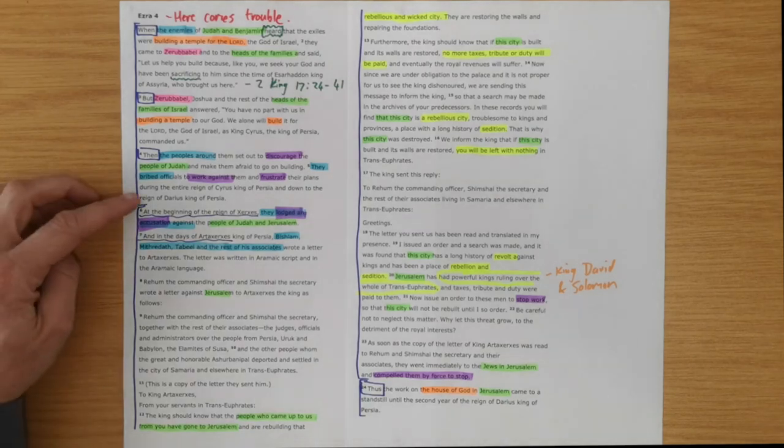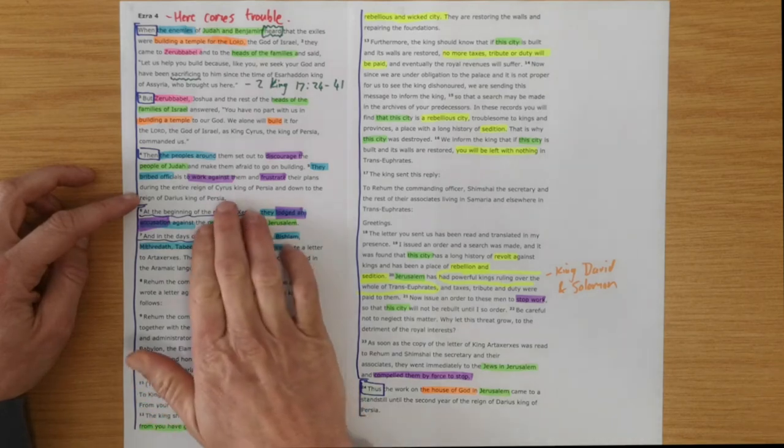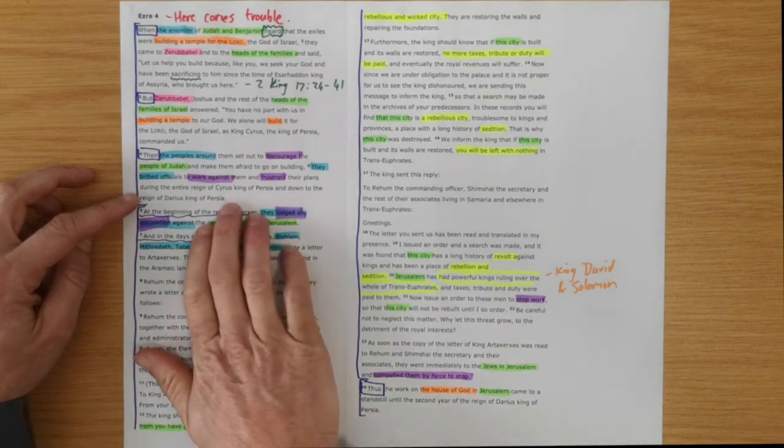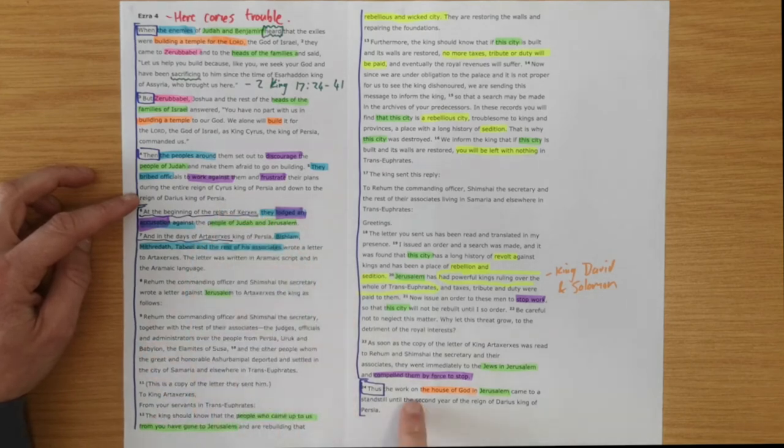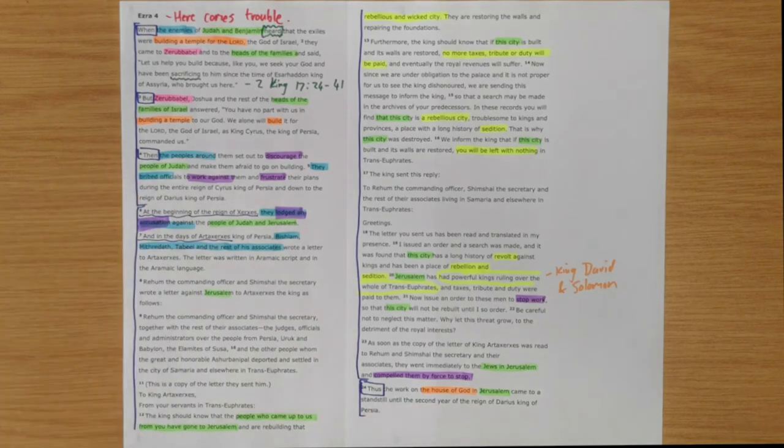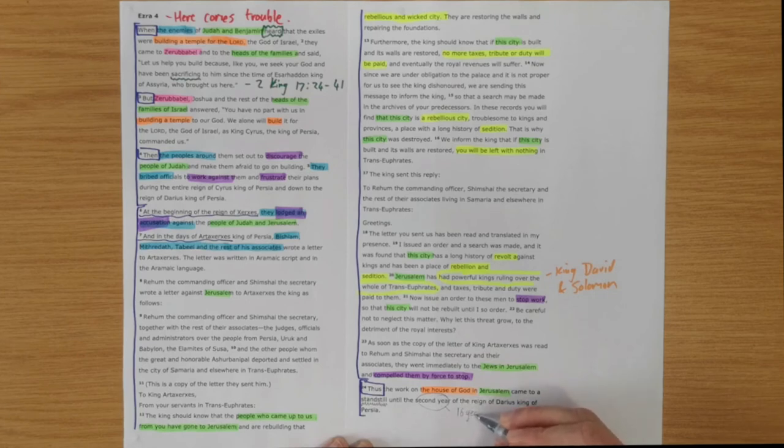Now, it would have been wonderful if verse 5 had continued and said, 'Even though there's opposition,' you kind of wish that the verse went on and said, 'But they kept worshiping God. They kept trusting in his faithfulness and they finished the work.' But it doesn't say that. When the story is picked up in verse 24, it says that the work on the house of God came to a standstill. It stopped until the second year, 16 years later.